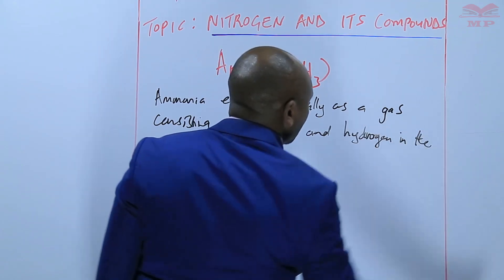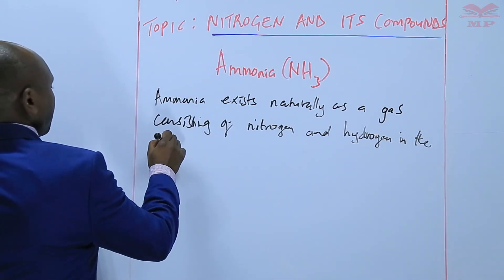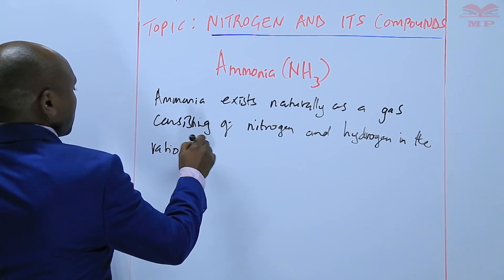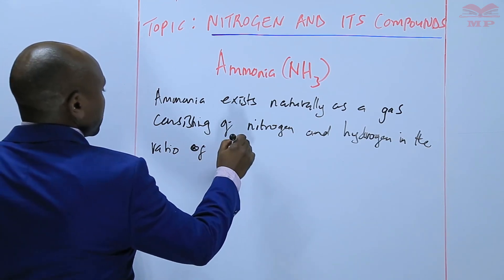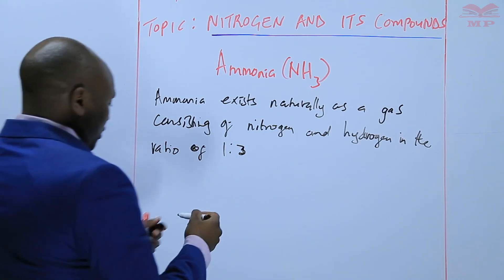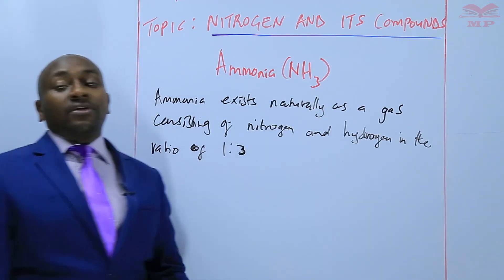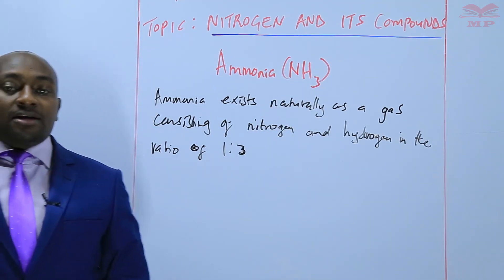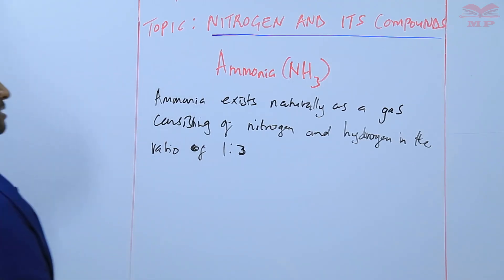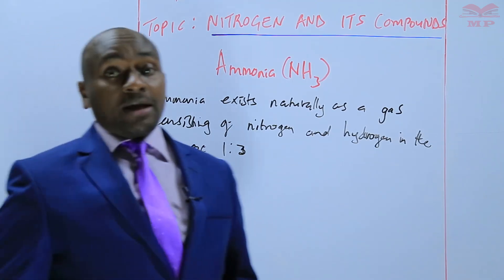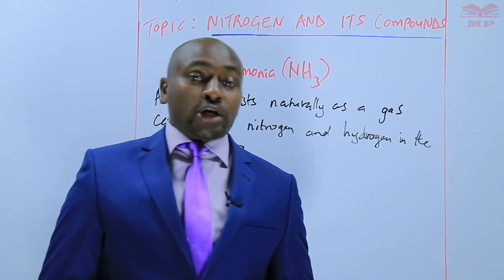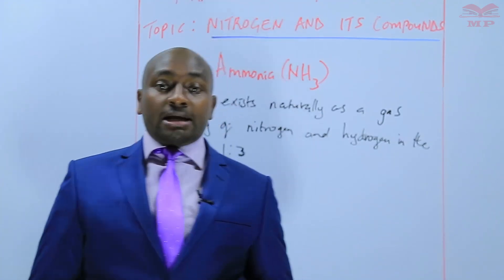In the ratio of 1 to 3, that means that for every one nitrogen there are three hydrogens. The next thing we are going to look at is how ammonia gas is prepared in the laboratory — laboratory preparation of ammonia gas.